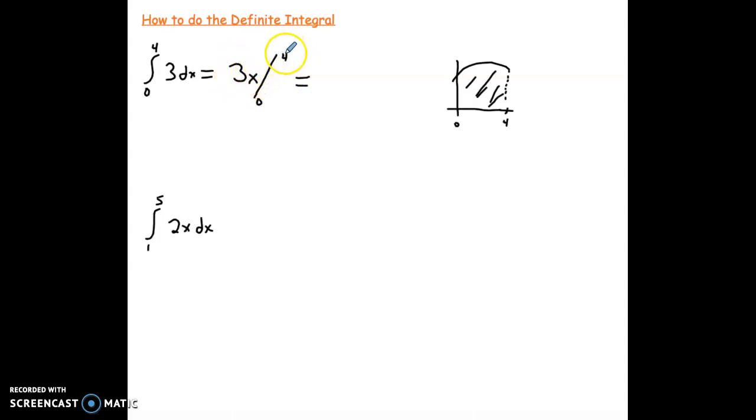You're going to plug in your upper boundary first. So plug it in for x value. So it's 3 times 4, and then you're going to go minus, plug in your lower boundary, 3 times 0. 3 times 4 is 12, minus 3 times 0 is 0. There's our answer of 12.